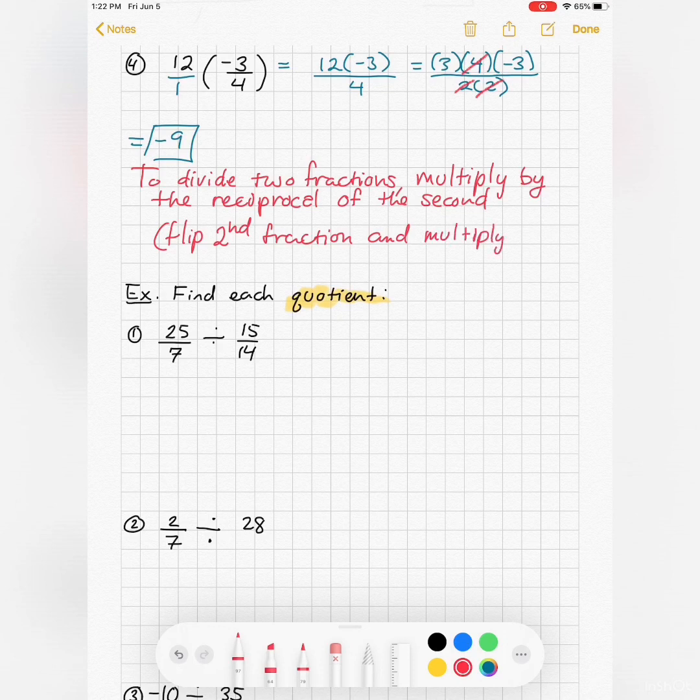So when I'm finding the quotient, I'm really using that rule. In other words, the first fraction stays the same. I find the reciprocal of the second fraction, in other words I flip it, and then I change to a multiplication. And then I'm just multiplying straight across.